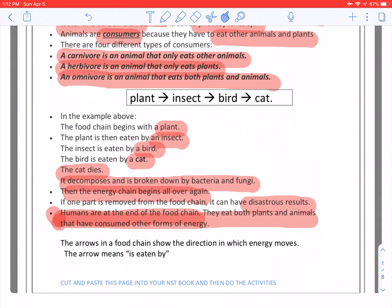The arrows in a food chain show the direction in which energy moves. The arrows mean is eaten by. So let's look at our diagram here. We have the plant that is eaten by the insect. We have the insect that is eaten by the bird, and the bird that is eaten by the cat.